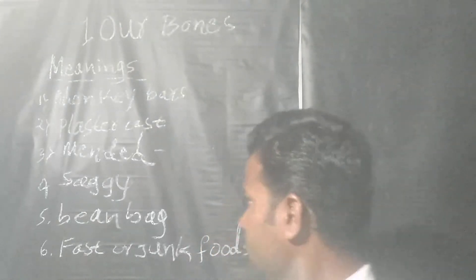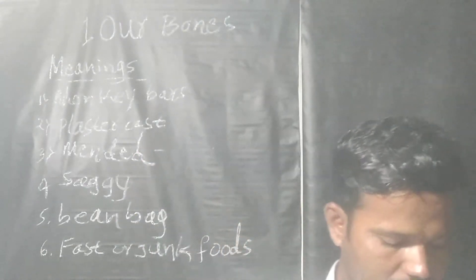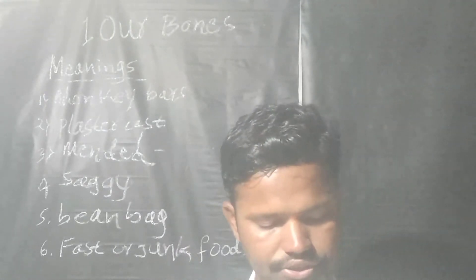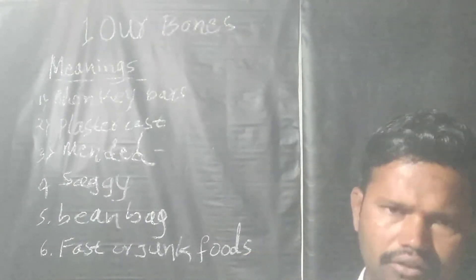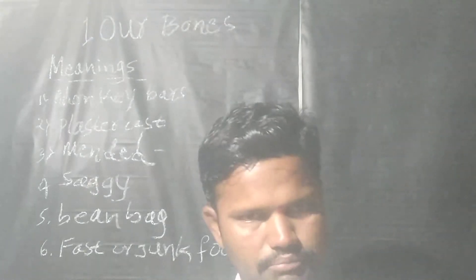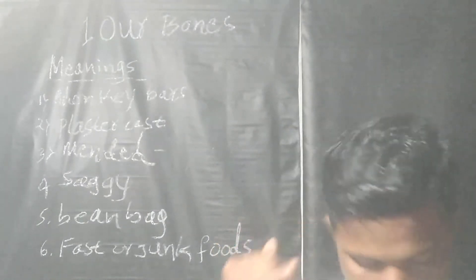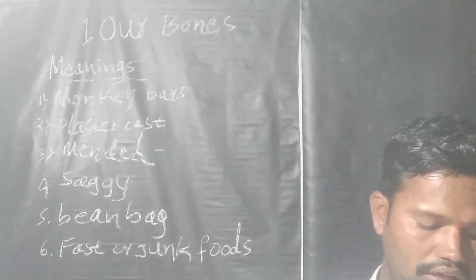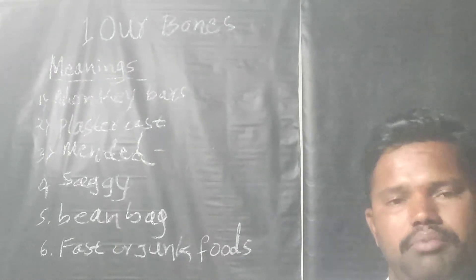The next word is 'plaster cast.' Plaster cast means a mold made with a thin material and plaster of paris to hold a broken bone in place — used in medical treatment for broken bones. The next word is 'mended,' which means healed, repaired, or put in a proper shape.